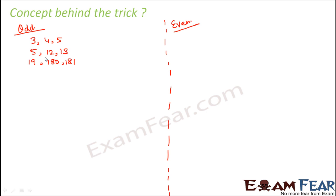If you observe all the triplets, do you see something in common? One common thing is that in every triplet the difference between two numbers is one. In the second triplet, the difference between 12 and 13 is one; in the third triplet, the difference between 180 and 181 is one. So in all triplets where the smallest member is an odd number, the difference between the other two members is equal to one.